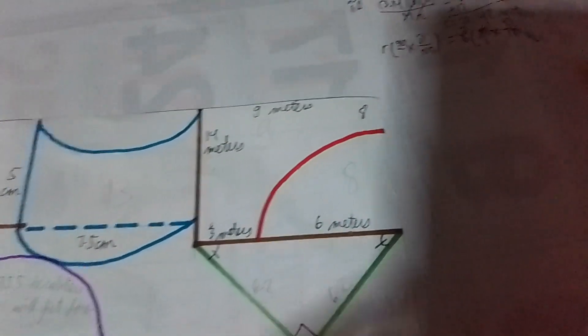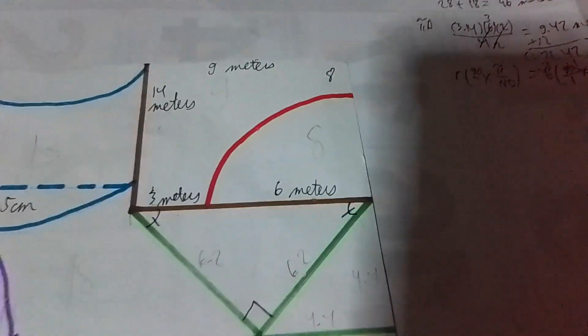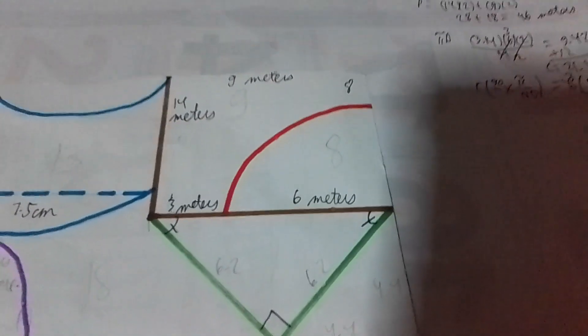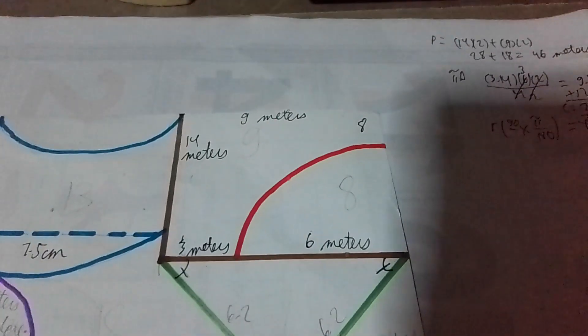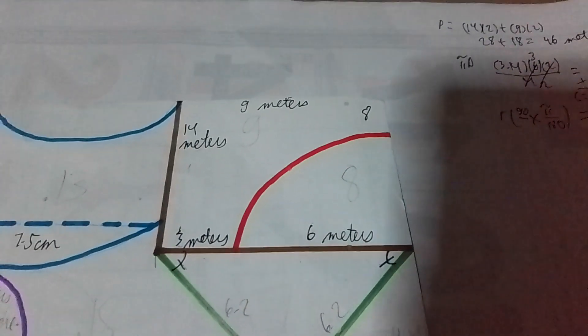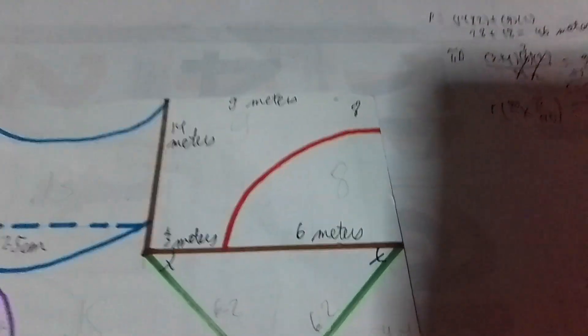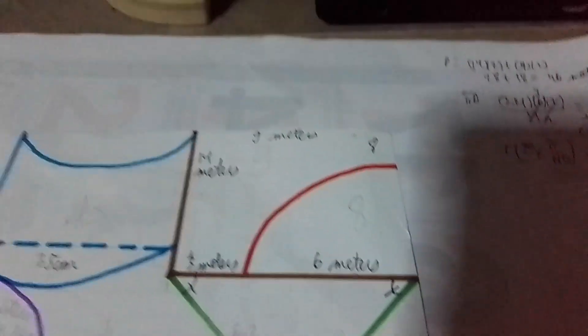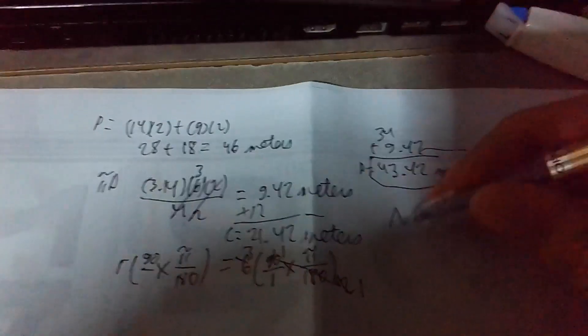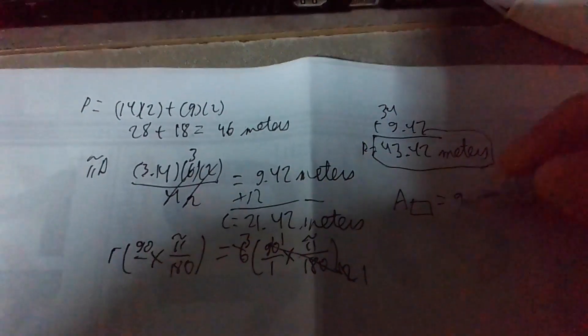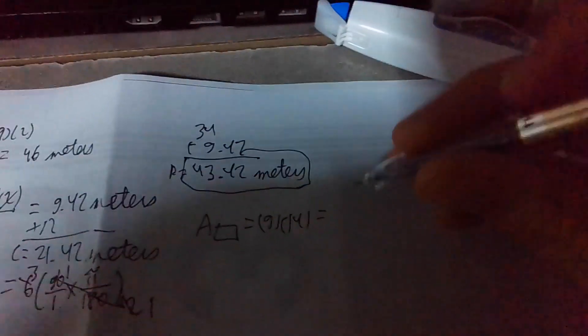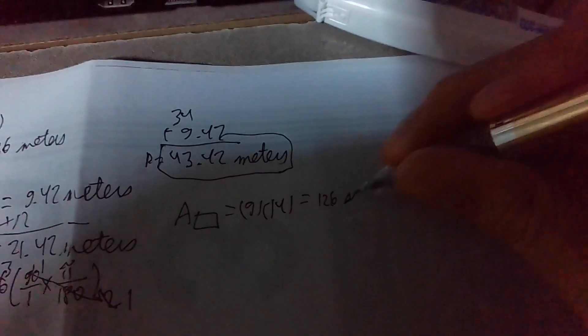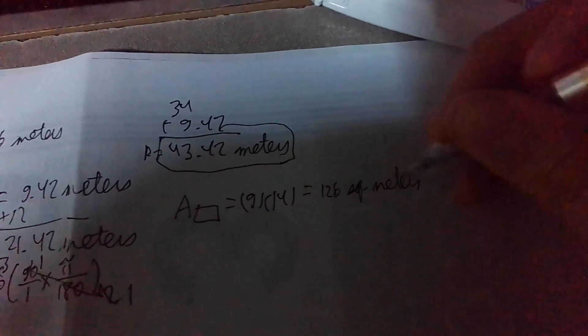Now, let's solve for the area. For the area, it's easy. First, let's solve for the area of the rectangle. Area of rectangle is length times width. 9 times 14. The area of rectangle is 126 square meters.